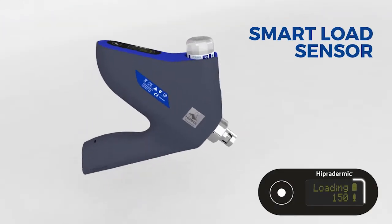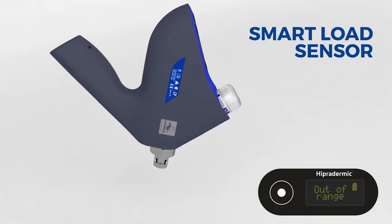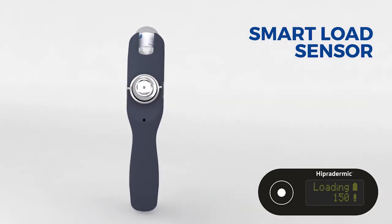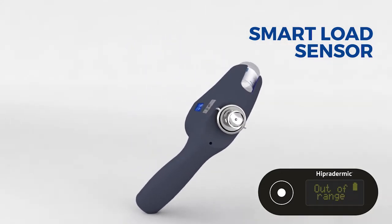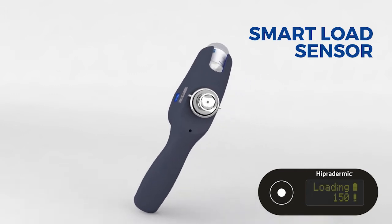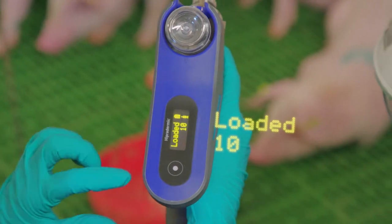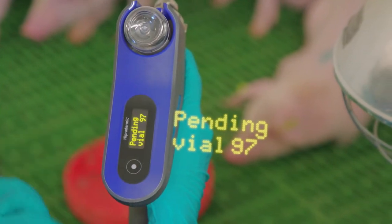Once the injection is given, the smart load sensor of Epidermic will ensure the correct loading of the next dose taking into account the amount of liquid left in the vial. The pending doses left in the vial can be controlled at any time.